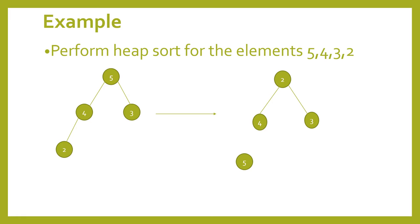Now let's see an example. Perform heap sort for the elements 5, 4, 3, and 2. The tree is constructed, and each last leaf node should be replaced with the root node.